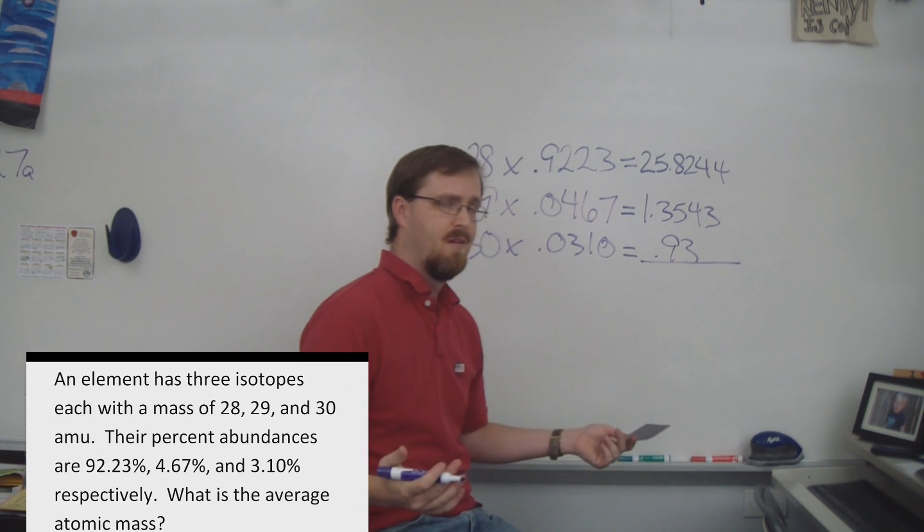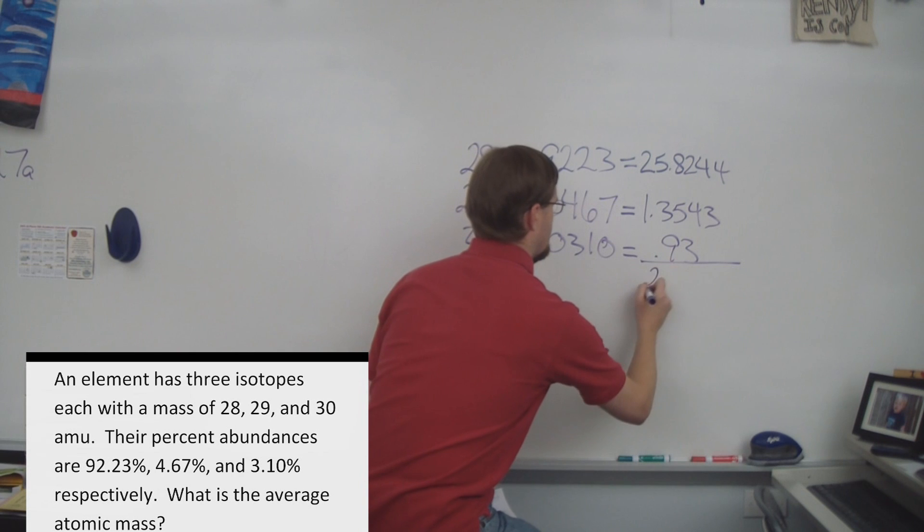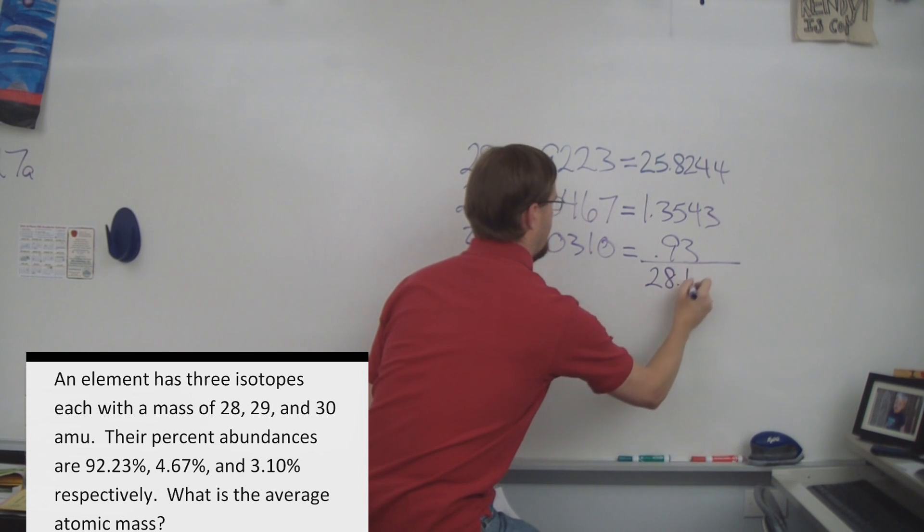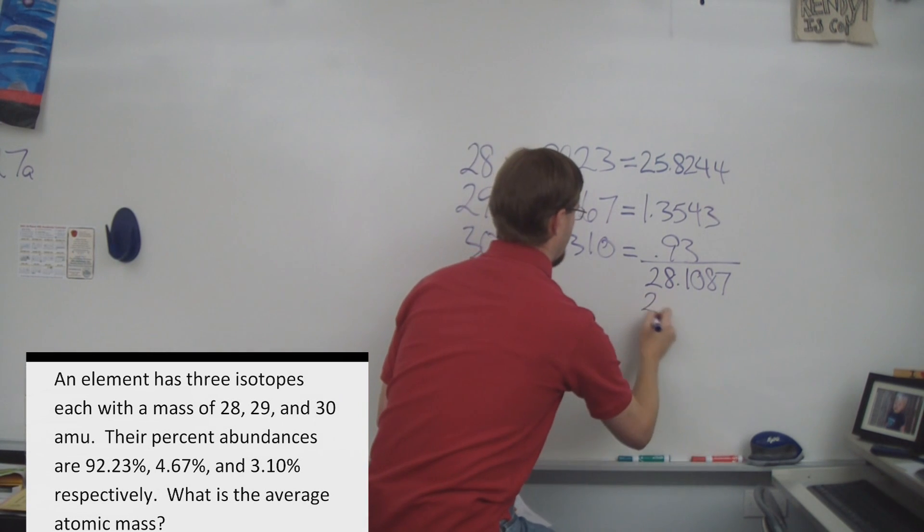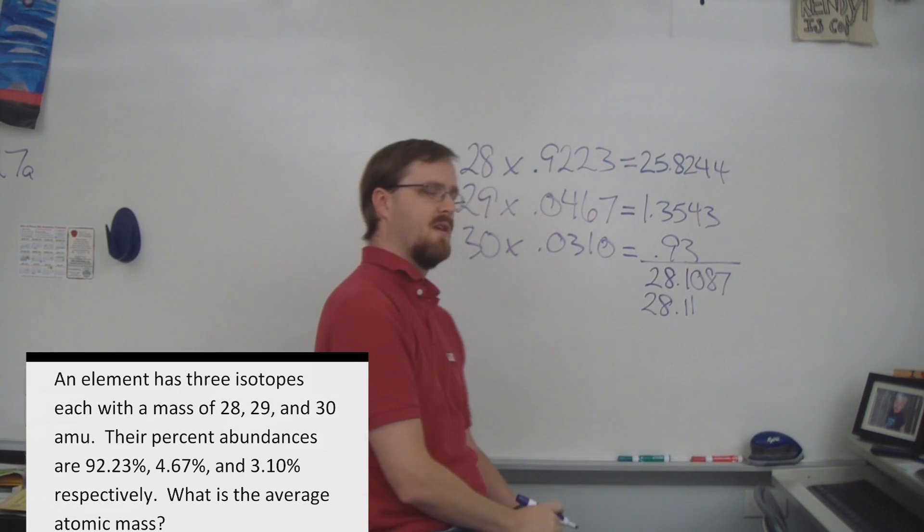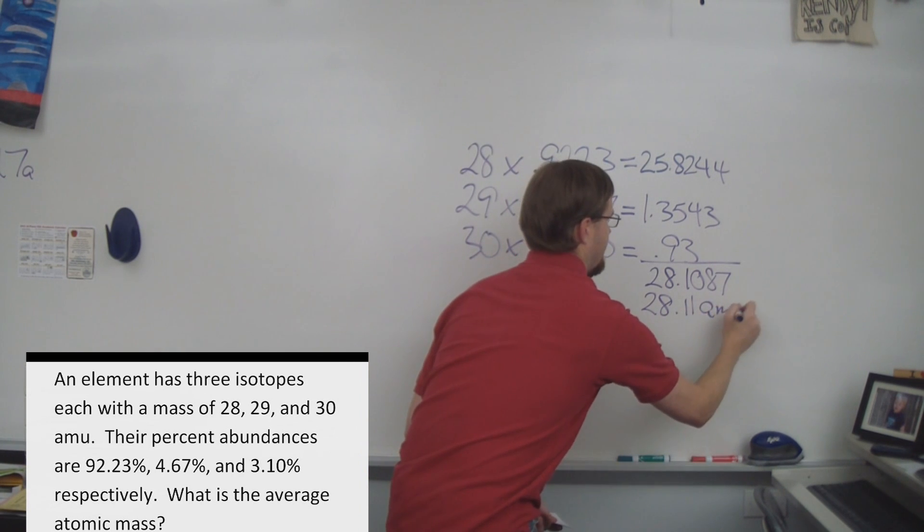Okay, so what do we do at this point? All we do is we add them all up. So we will get 28.1087. And if you would like to round that, we can just simply round that to 28.11. And what are the units? Well, this is average atomic mass, which is measured in AMU.